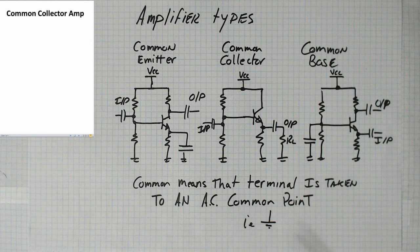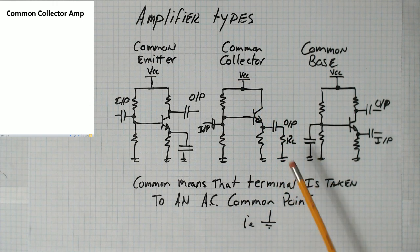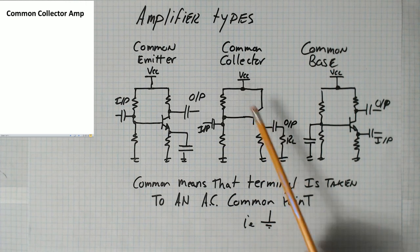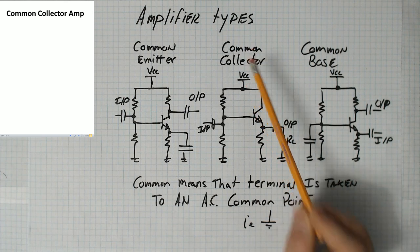But when we thevenize this circuit, we're going to take that DC source and we're going to tie it to ground. And so this will be an AC ground point. So the collector has been taken to an AC common point.